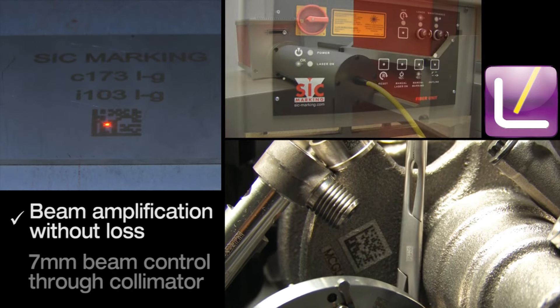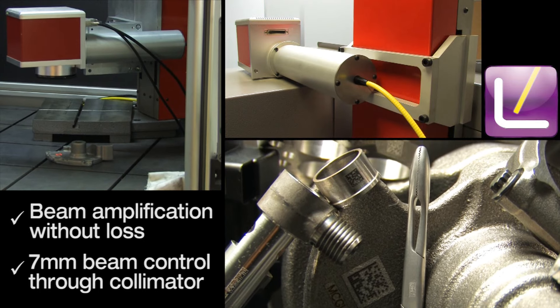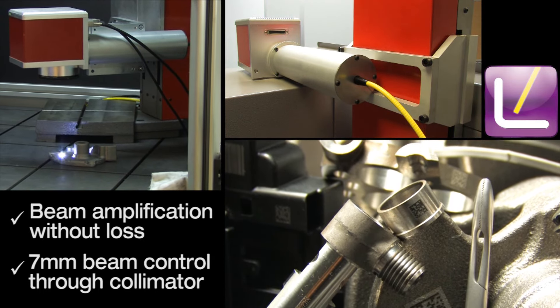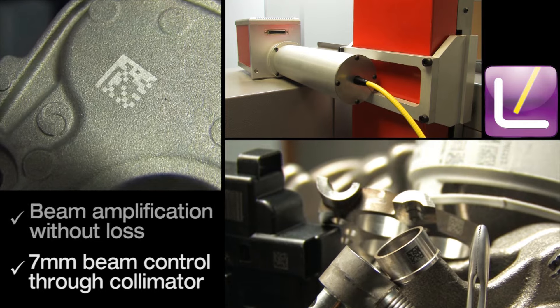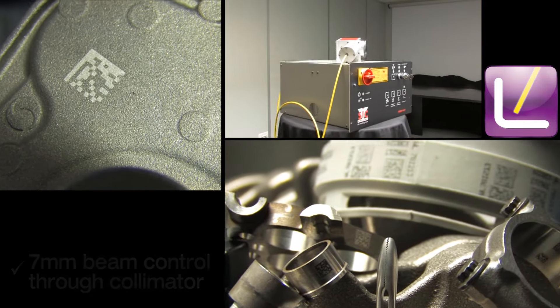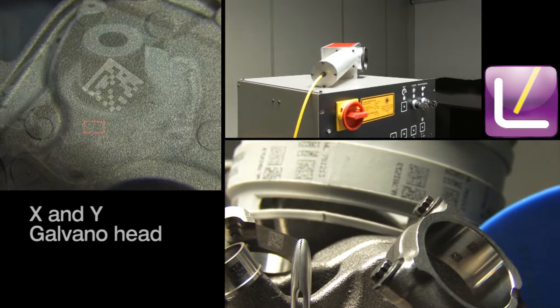The galvano head is equipped with two mirrors which direct the laser beam for fast and precise marking. Finally, a lens concentrates the signal power into a 30 µm beam.